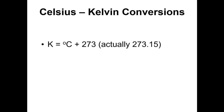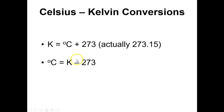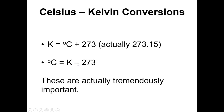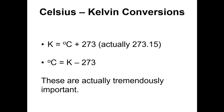What you do need to be able to do often in this course is Celsius-to-Kelvin conversions. Kelvin equals degrees Celsius plus 273 — technically 273.15, but adding 273 to any Celsius temperature we'll encounter gives three significant figures, which is usually enough. Conversely, degrees Celsius equals Kelvin minus 273. These are tremendously important conversions that you need to master. Now you'll have some sort of QOD assignment associated with this video.